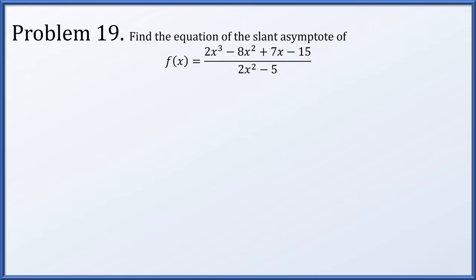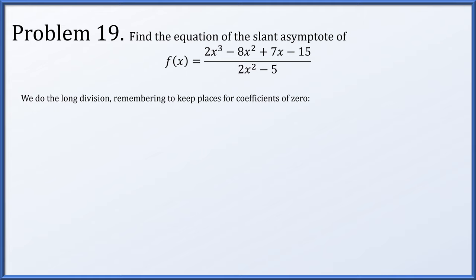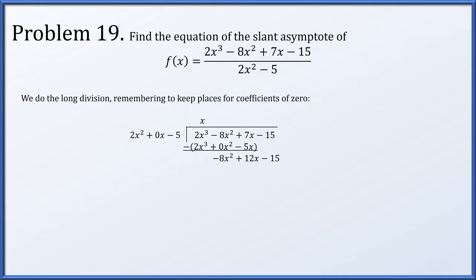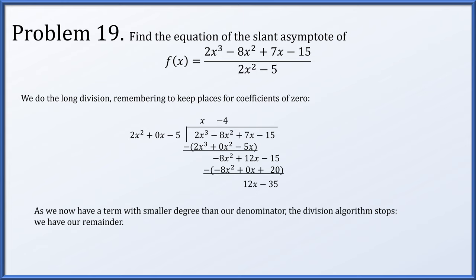In problem 19, find the slant asymptote of f of x equals 2x cubed minus 8x squared plus 7x minus 15 divided by 2x squared minus 5. Set up long division: write the denominator as 2x squared plus 0x minus 5 to keep track of the missing x term. Dividing into 2x cubed minus 8x squared plus 7x minus 15 gives a quotient of x minus 4 with remainder 12x minus 35. The quotient gives the slant asymptote, so y equals x minus 4.